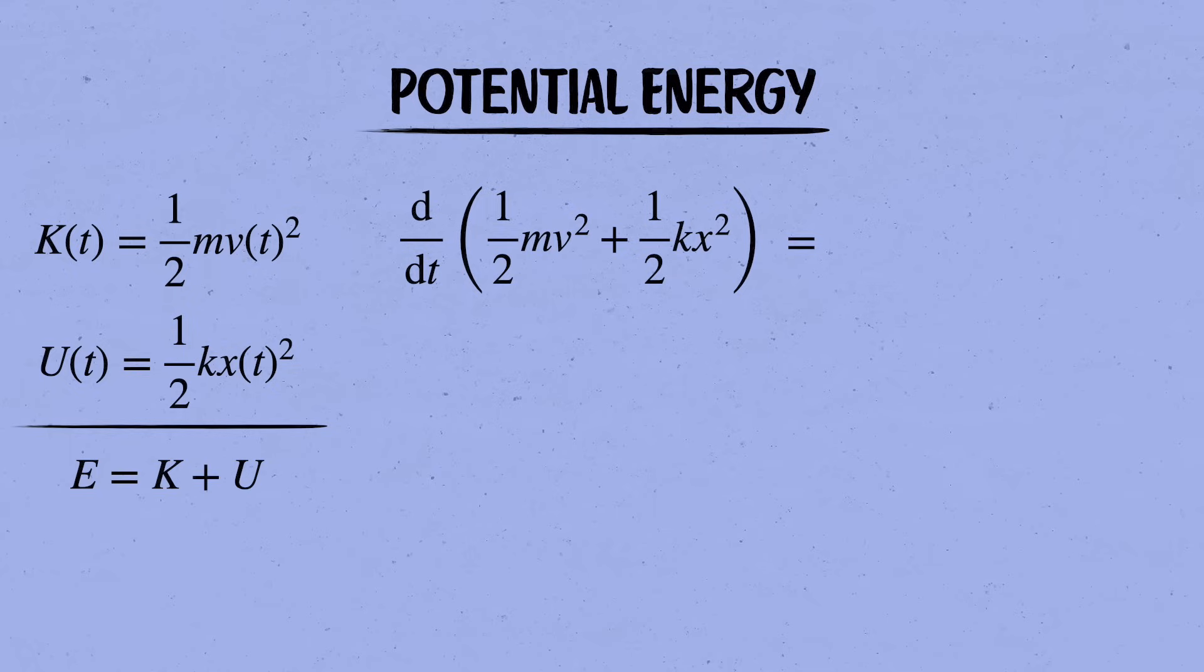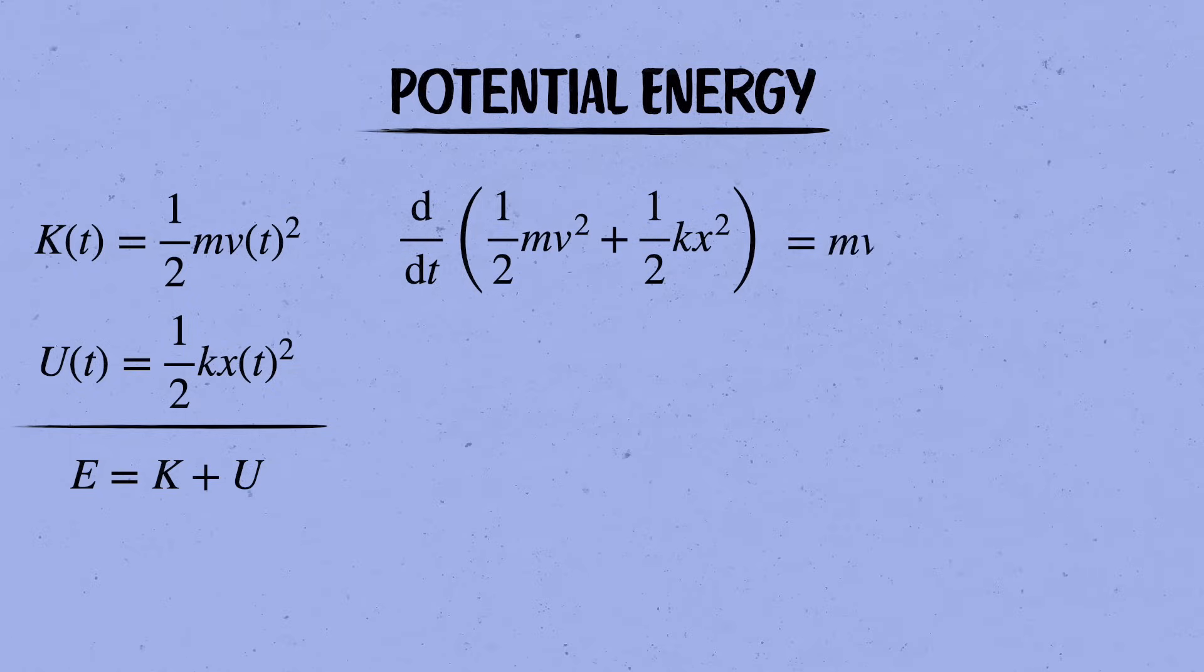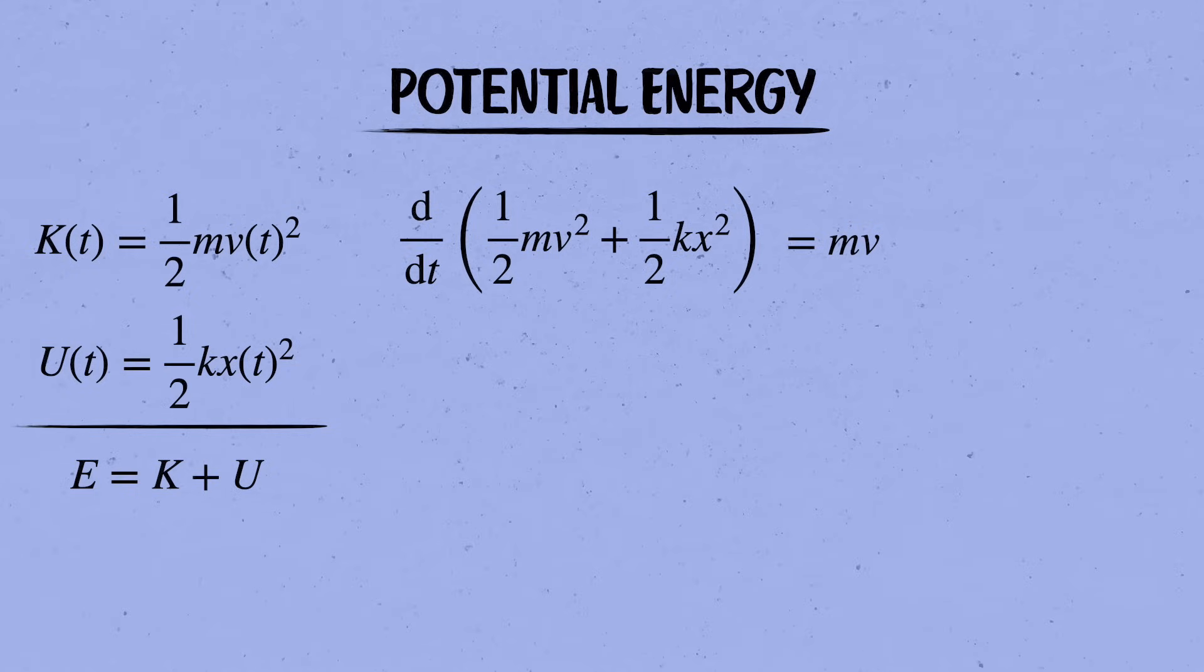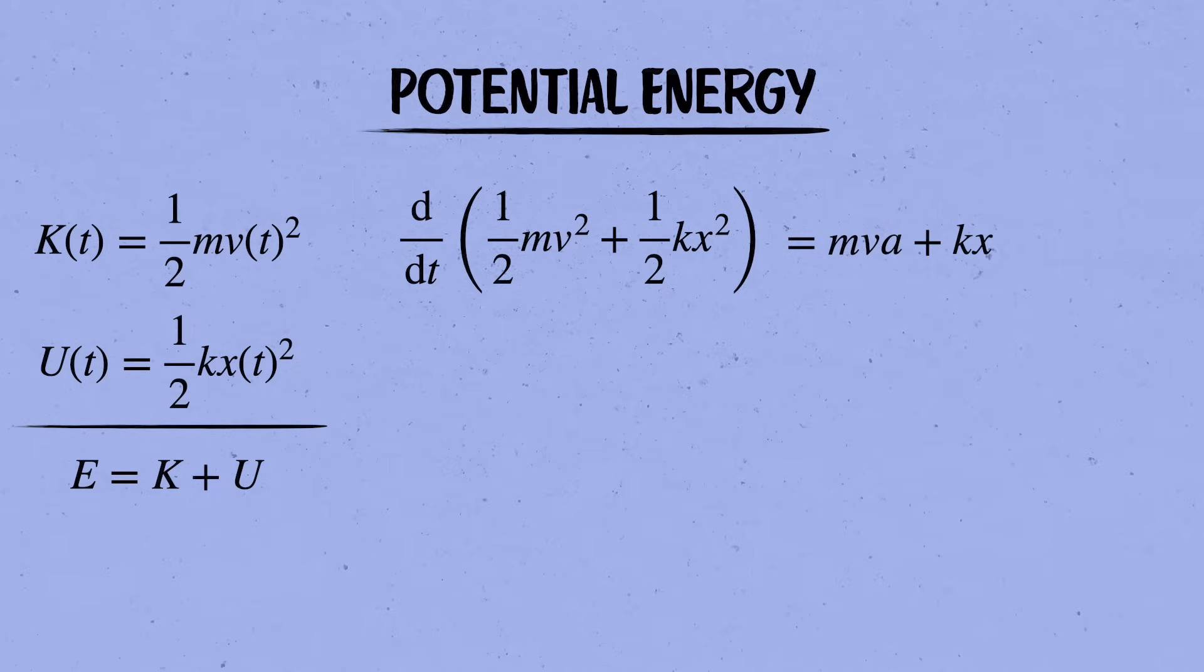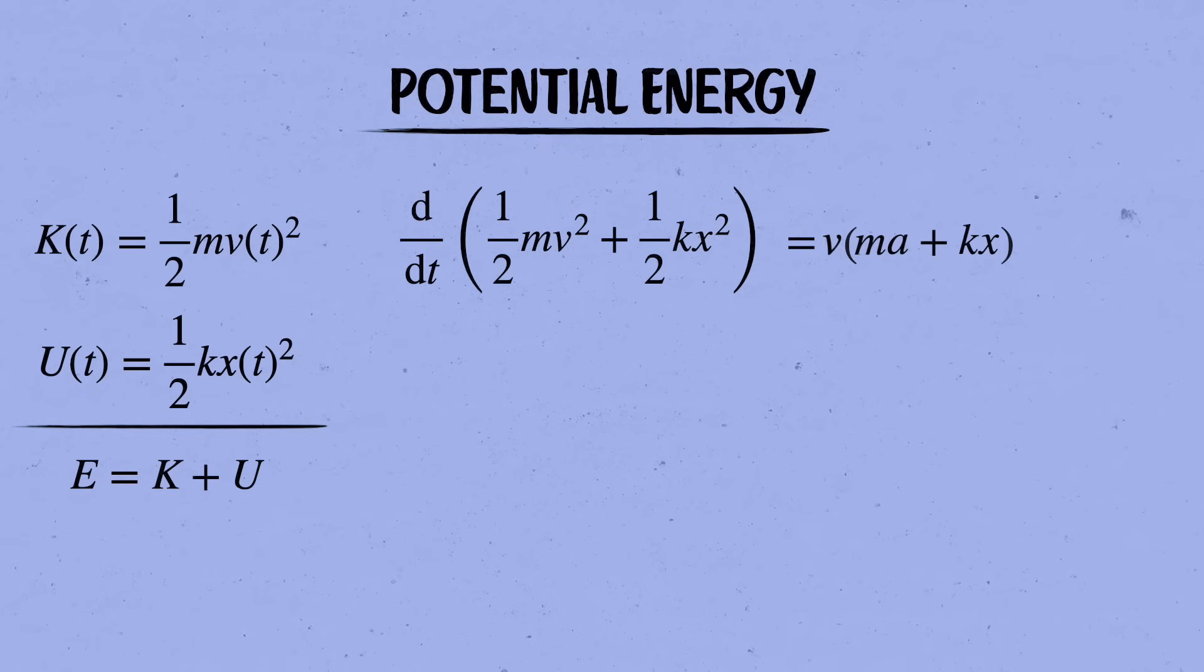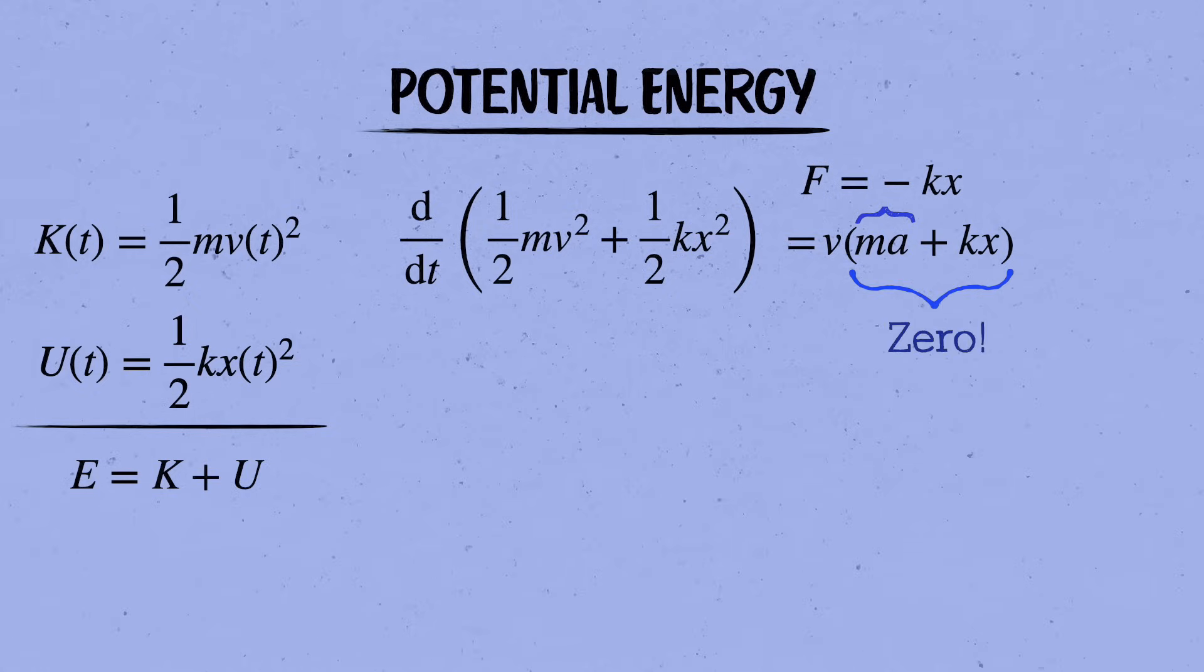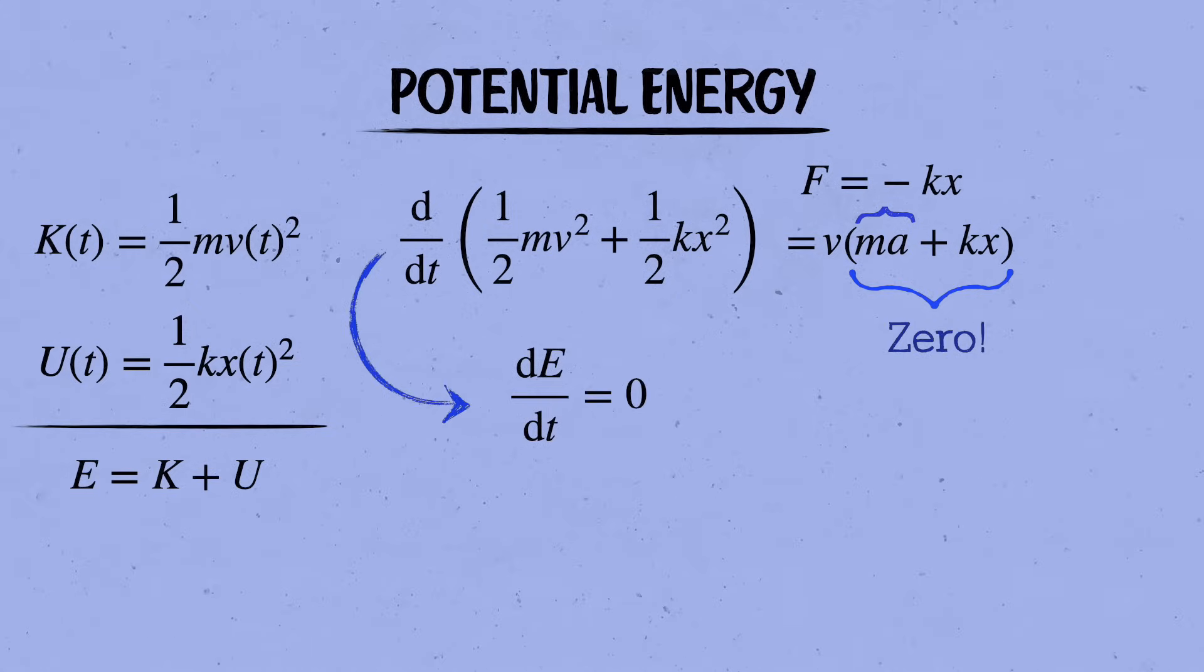And we can check that just by taking the rate of change of e. In the first term, we bring down that power of 2 to get m times v, and then because of the chain rule, we need to multiply that by the rate of change of v, which is the acceleration a. Likewise in the second term, we again bring down the 2 and get kx, and then that gets multiplied by the rate of change of x, which is the velocity v. Now if we pull out this common factor of v, then the thing in parentheses vanishes because of f equals ma. So the total energy is indeed a constant.